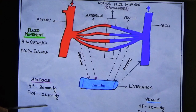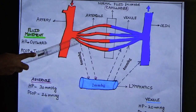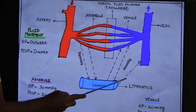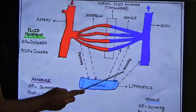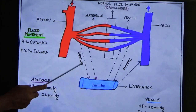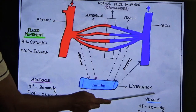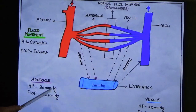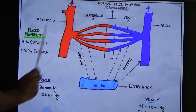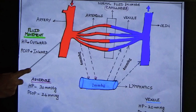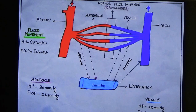In normal fluid exchange: at the arterial end, 30 − 24 = 6 mmHg of fluid comes out. At the venule end, 20 − 24 = −4, so 4 mmHg of fluid goes back in. Net: 6 out minus 4 in = 2 mmHg excess, which drains into the lymphatics. The lymphatics then drain into the veins. Fluid movement is governed by hydrostatic pressure (water content) and PCOP (protein content).